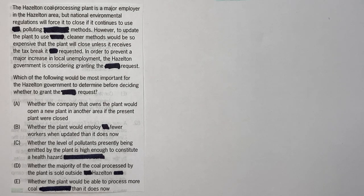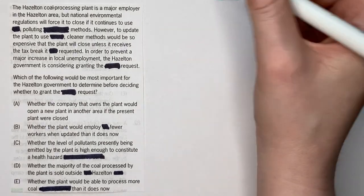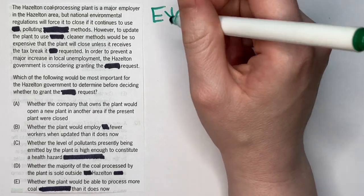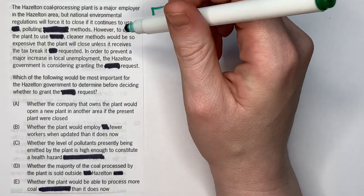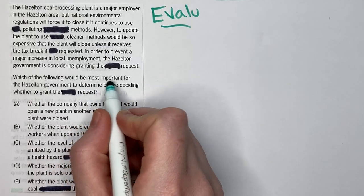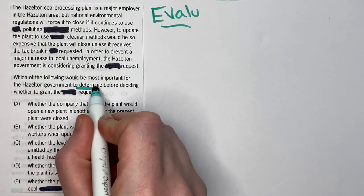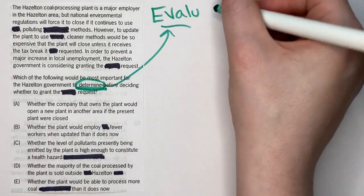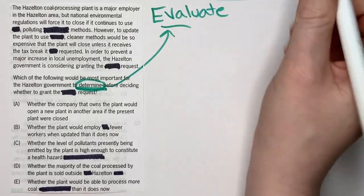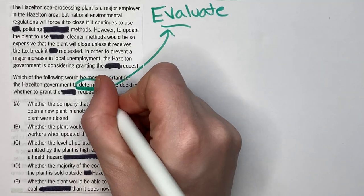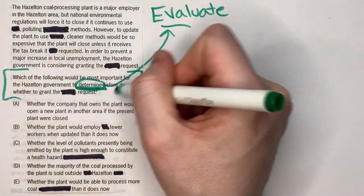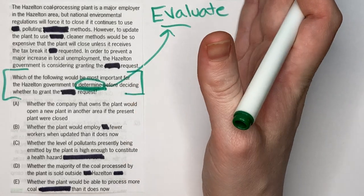We're going to look at an evaluate question. Evaluate questions are interesting because the language — 'what would be most important to determine' — that word 'determine' is really the clue that it's an evaluate question. The first thing you do with any CR question is go to the question stem and figure out which question type it is.